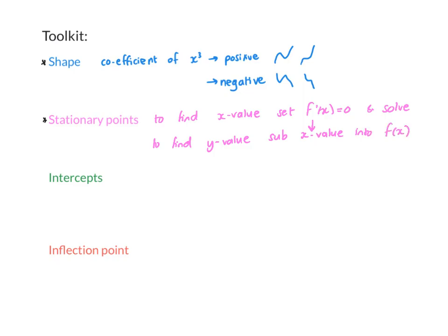Once you have the shape and the stationary points, the intercepts are optional depending on what your instructions are. As always, to find the y-intercept, you make x equal to zero and solve for y. To find your x-intercept, you make y equal to zero and solve for x.